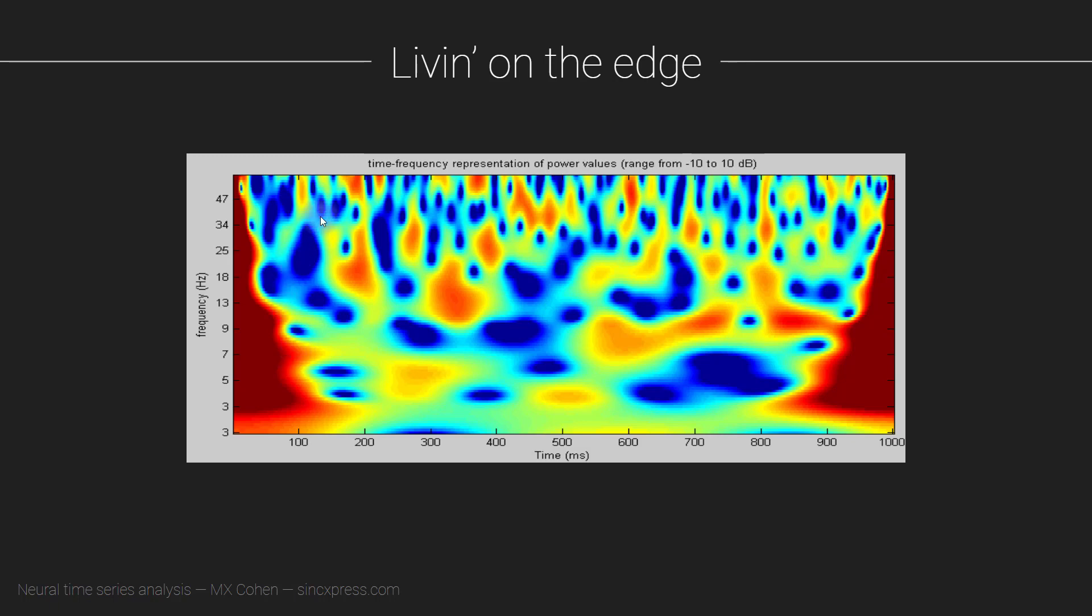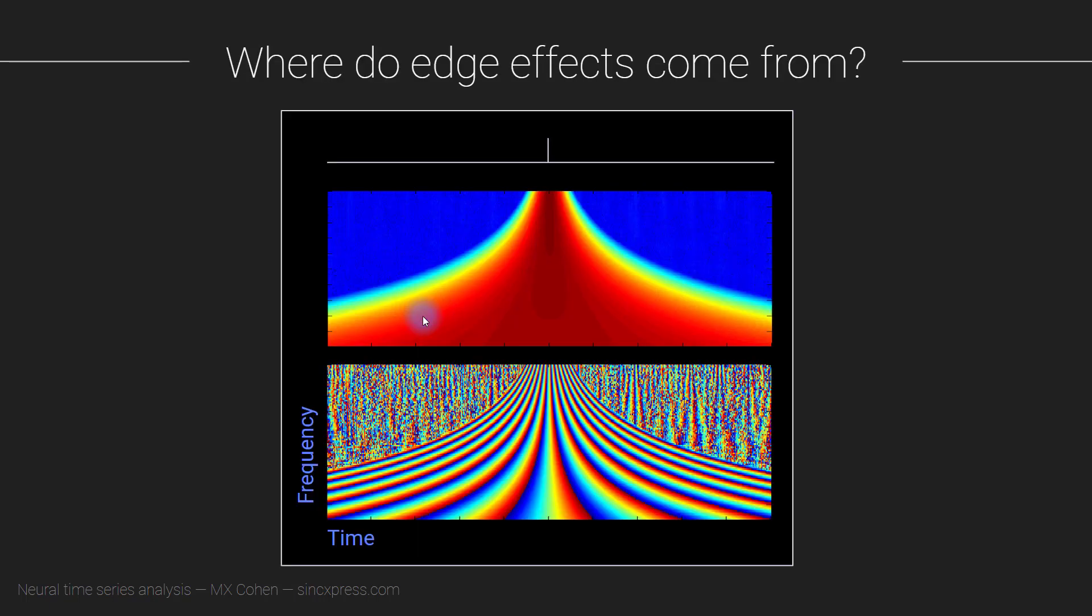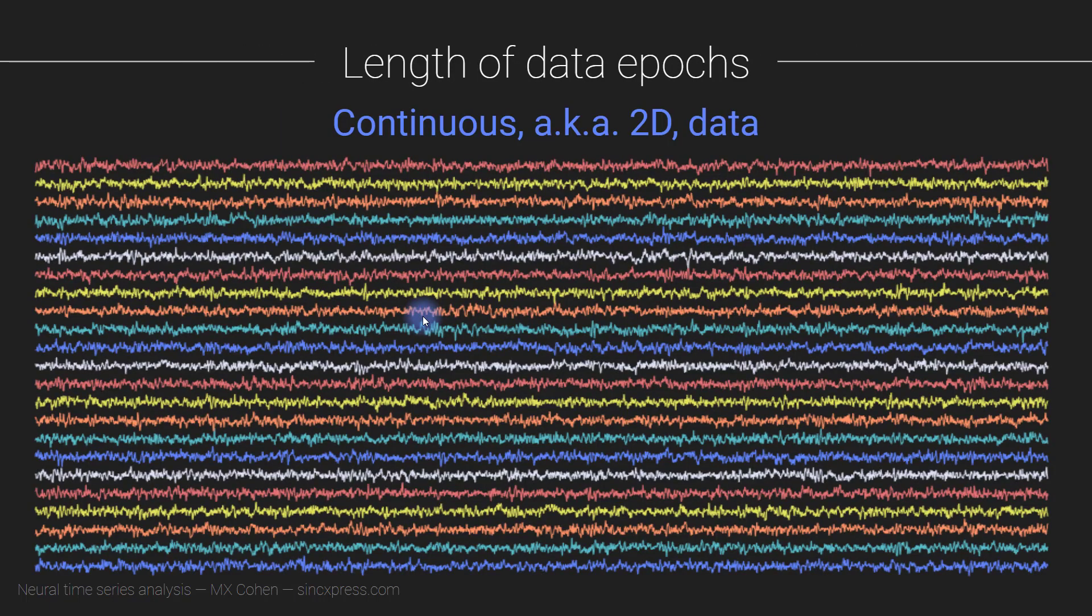The solution is to accept that edge effects will be present, and you just make sure that those edge effects are not going to contaminate the time windows that you are interested in. So that is related to cutting your epochs, so cutting your continuous data into epochs.